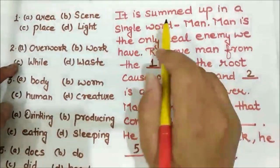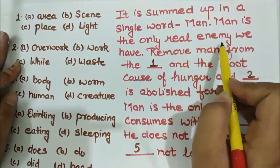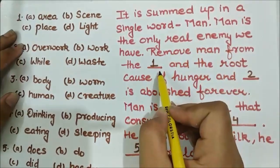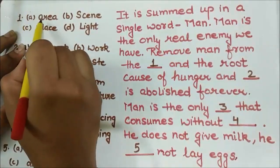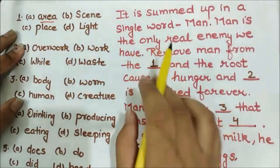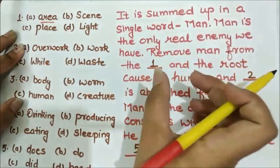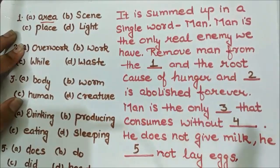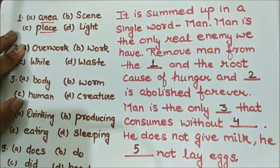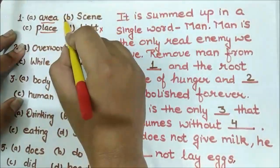The first blank: 'Remove man from the ___.' From where can we remove man? If we talk about 'area,' it is not possible to remove man from one particular area and protect the environment. Similarly with 'place,' we cannot solve the problem by removing him from one particular place. 'Light' — no chance. The remaining option is 'scene.' So: remove man from the scene.